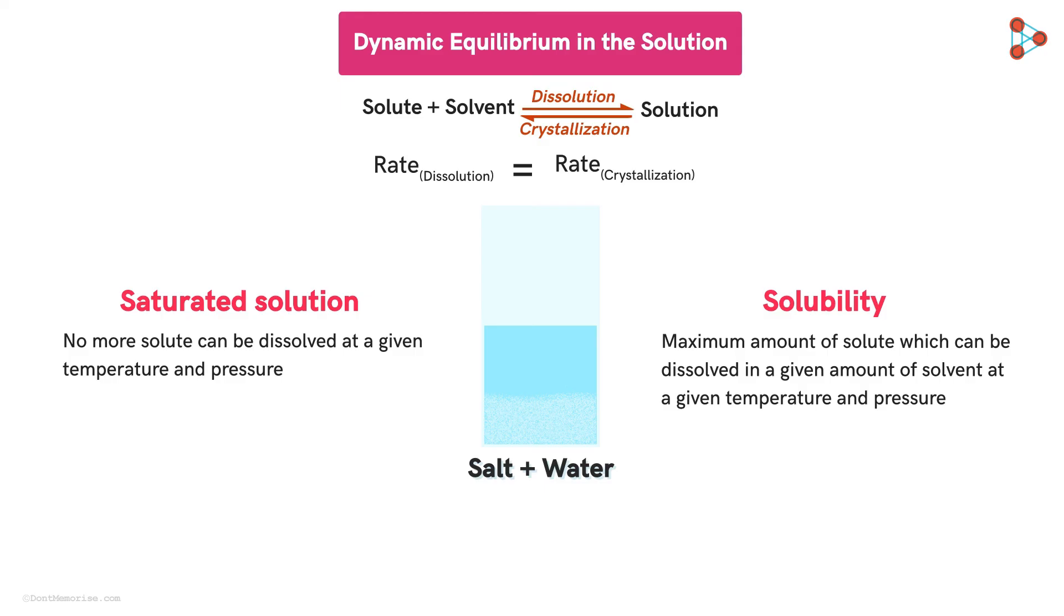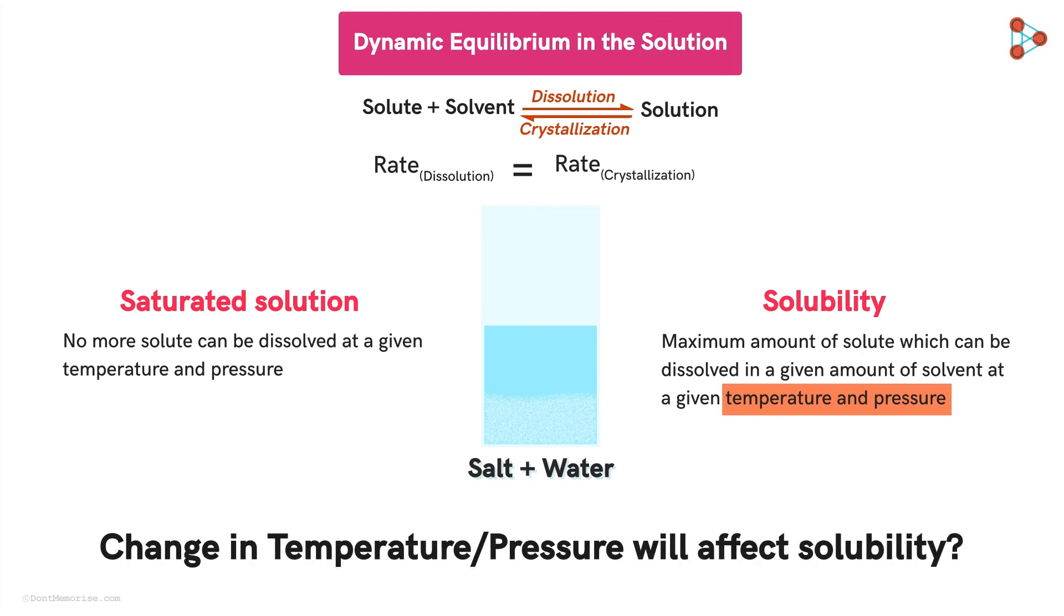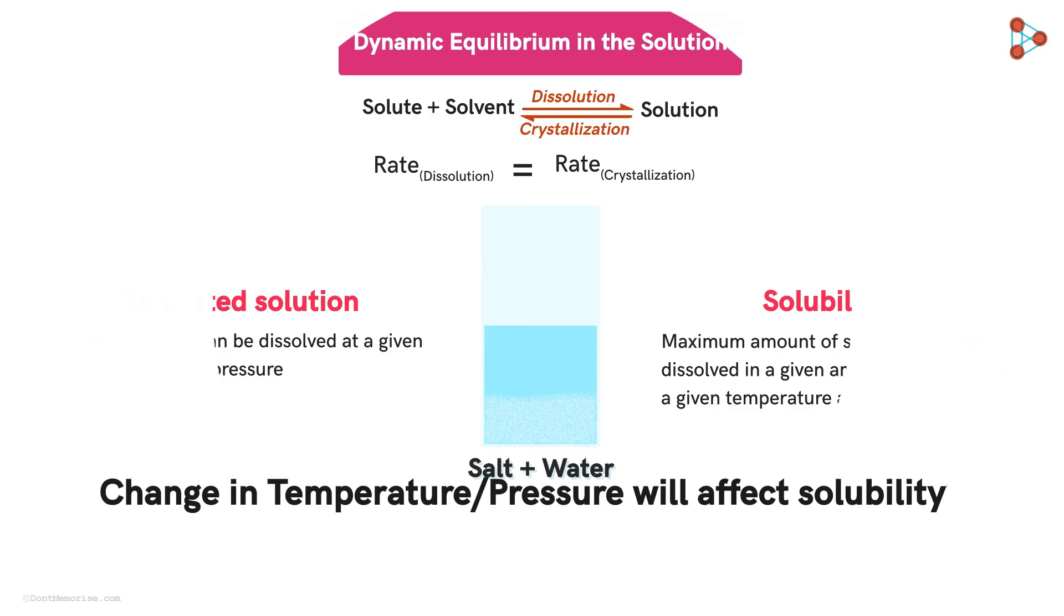Now, notice that here we mentioned that solubility depends on the temperature and the pressure. So, does it mean that if we change the temperature or the pressure of a solvent, we will be able to dissolve more solute? Yes, we will see how the change in temperature or pressure of a solution changes its solubility in the upcoming videos.